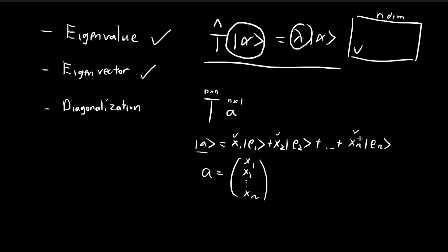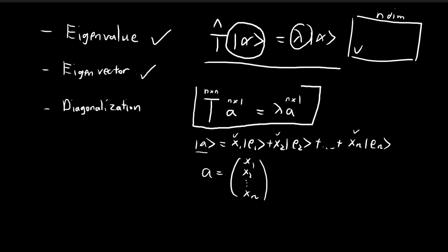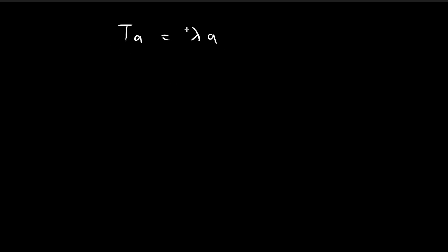So we can represent the left-hand side expression using matrices, as shown in the linear transformations videos. For the right-hand side, we have lambda multiplied by alpha, represented again by the n by 1 column matrix A. Using this matrix representation, we can find what the eigenvalues should be. We arrived at the expression: an n by n matrix times an n by 1 matrix equals a scalar times an n by 1 matrix. I'm going to modify this by inserting the n by n identity matrix.